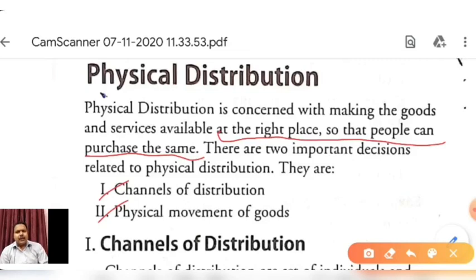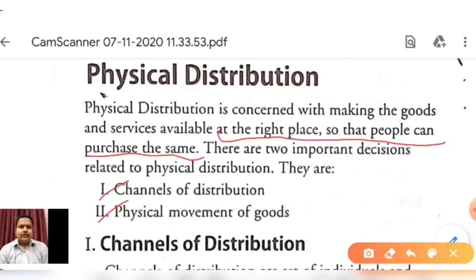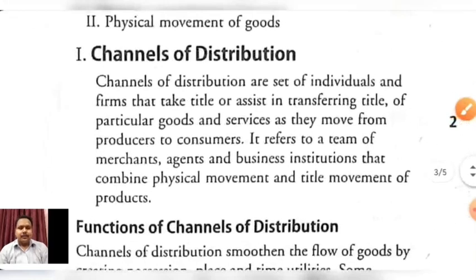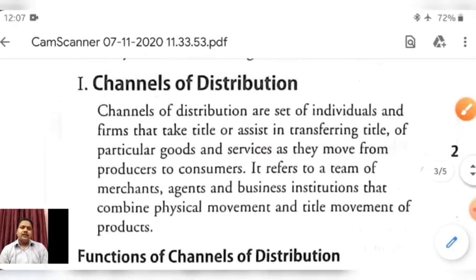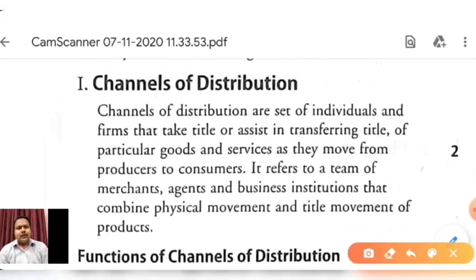When we talk about place mix, we decide an effective system to deliver products and services to the right place so that the customer can easily purchase goods. This includes two things: the first is the channel of distribution and the second is the physical movement of goods. We will discuss each component of place mix one by one, starting with the first component — the channel of distribution.